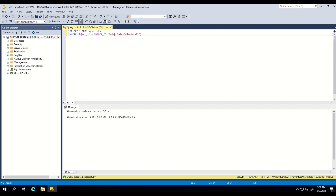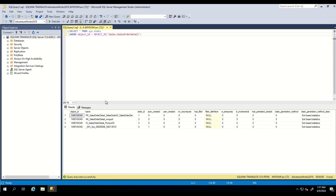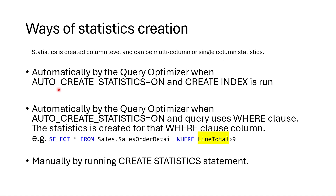Let's first learn how to check what statistics are available for a specific table in SQL Server. For this, we use this query by specifying the target table. Statistics is created at the column level and can be multi-column or single-column. Statistics is created in three ways: automatically by the query optimizer when auto-create statistics is on and CREATE INDEX is run, or automatically when auto-create statistics is on and a query uses a WHERE clause.